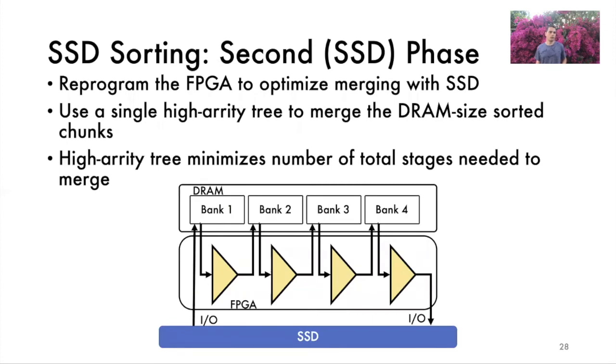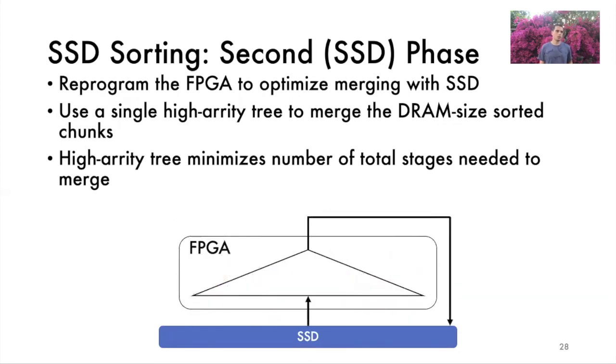After the first phase, the array is organized into many DRAM size sorted chunks. This means the DRAM is too small to mask the slow SSD bandwidth during the remaining merge stages. As we cannot rely on DRAM bandwidth to get good performance in the second phase, we can reduce sorting time only by minimizing the remaining number of merge stages. To that end, we reconfigure the FPGA to run a single high arity merge tree during the second phase. We then use this tree to recursively merge the DRAM size sorted chunks. For example, using a tree of arity L equals 256, we can merge up to 4,000 terabytes of data in only two stages within the second SSD phase.